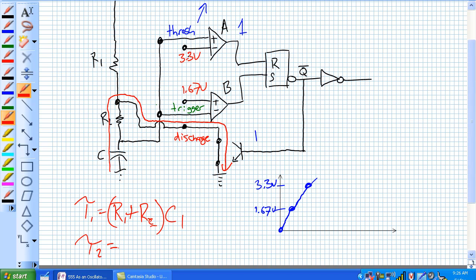And now, what we get is time constant 2 is equal to R2 times C1.